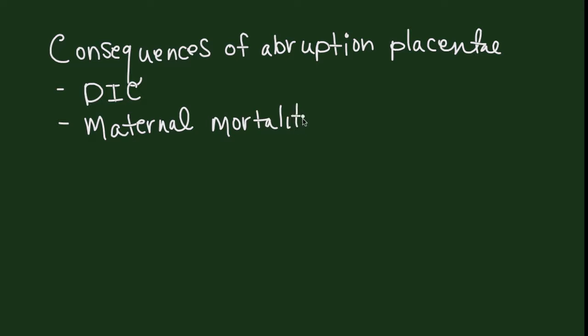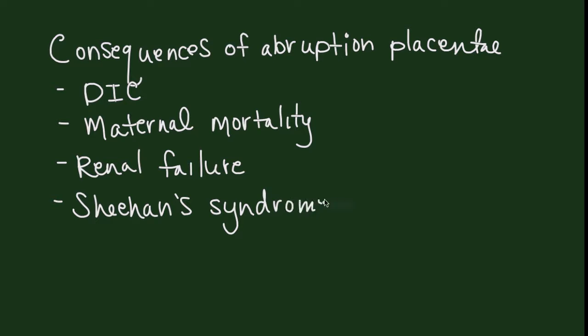Three, renal failure. Four, Sheehan's syndrome, which is pituitary ischemia resulting in infarction and can be a cause of diabetes, hypothyroidism, loss of ability to ovulate, and loss of menstrual periods. And the fifth is fetal mortality.